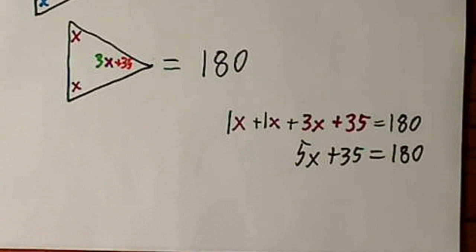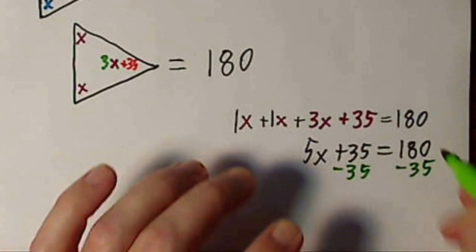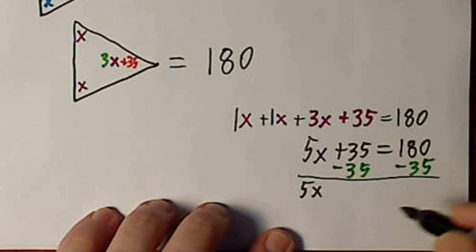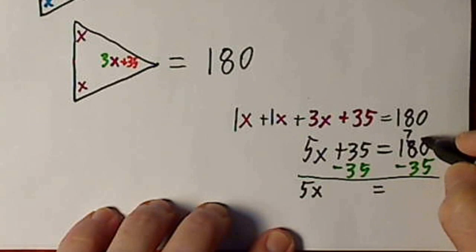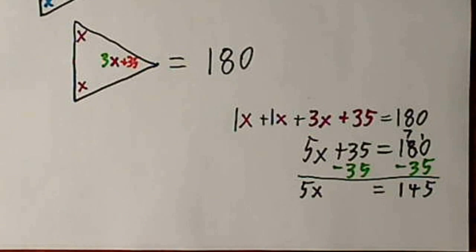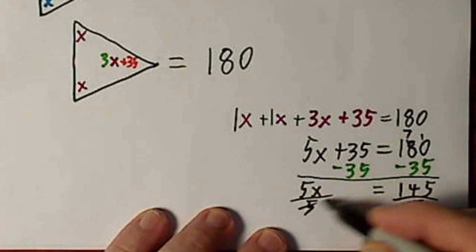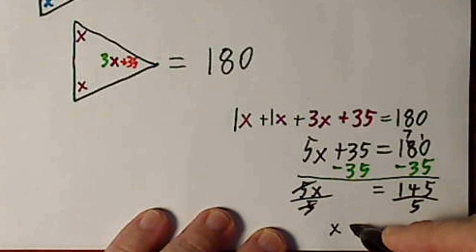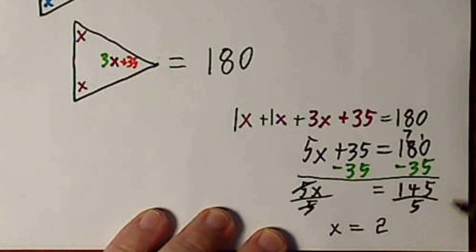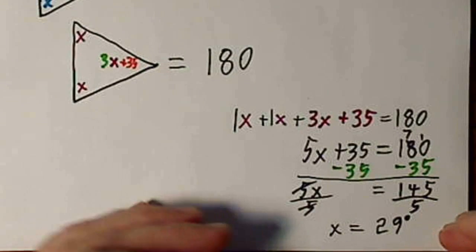And we want to get rid of that 35. So we have 5X equals 145 degrees. And let's get rid of our 5. 5 goes into 5 once, and we now know that X is equal to 29. So it's actually 29 degrees.